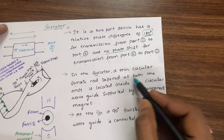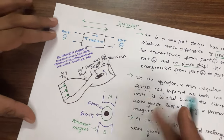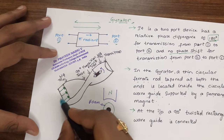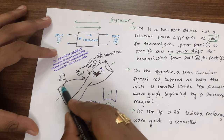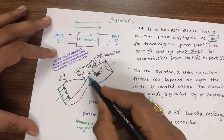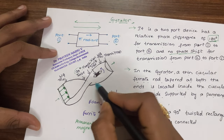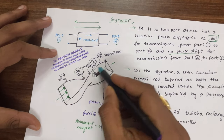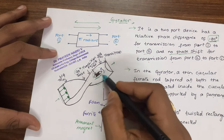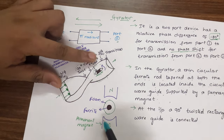In a gyrator, a thin circular ferrite rod tapered at both ends is located inside the circular waveguide, supported by a permanent magnet. This is how the geometry or internal structure of the gyrator looks. This is port number one, this is port number two. We have a rectangular waveguide which is twisted here at 90 degrees, then a circular waveguide, and at the end we have the output. Inside the circular waveguide we place a ferrite rod.